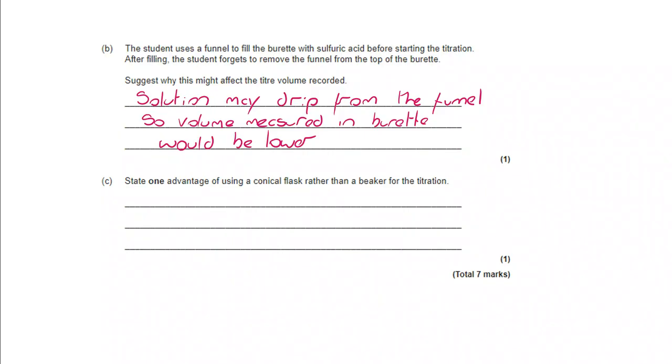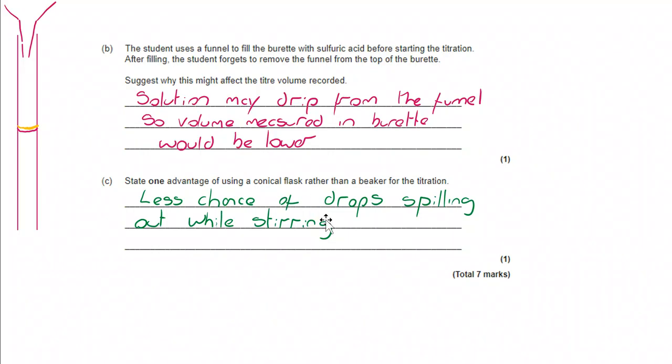What would be an advantage of using a conical flask rather than a beaker for the titration? Well, this is a really straightforward one. You've got less chance of drops spilling out while stirring.